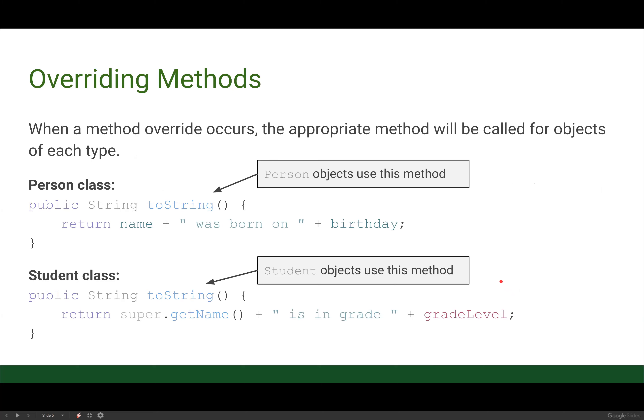When we perform a method override, the appropriate method will be called for objects of the appropriate type. If I make a person object and print it, the person class's toString will be called — whatever the most appropriate method is for each type of object. This is very similar to scope: we find the most local version of a variable and use that. The same applies here — if we have a more local definition for a method, we use that method call rather than the super class's method call.